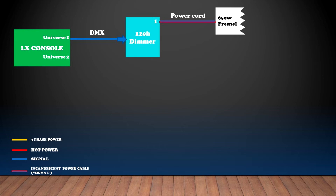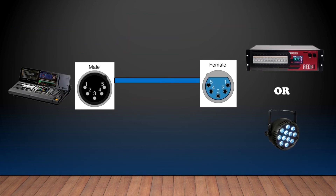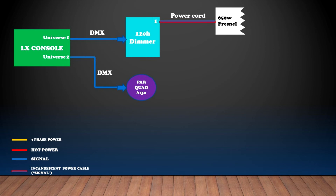So now we want to communicate with our LED quad pars, and so we will use Universe 2. We run a second DMX cable from the console to the LED quad par. Now this is very, very important: you should have the male end coming from your lighting console and the female end going to the light. Please make sure you run the cables the right way. So now that DMX is plugged into the first LED quad par, we can then go from the out of the LED quad par into the second LED quad par via a DMX cable.